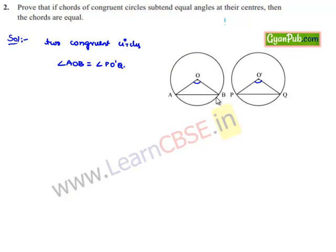We need to prove that AB is equal to PQ. In order to prove this, let us consider triangle AOB and triangle PO'Q.